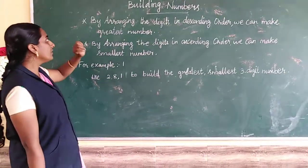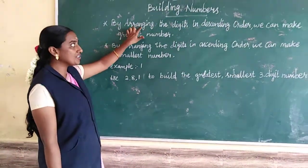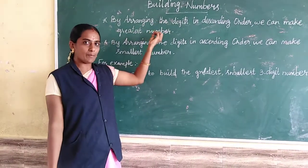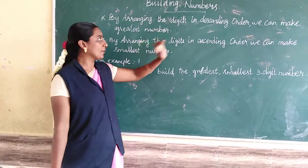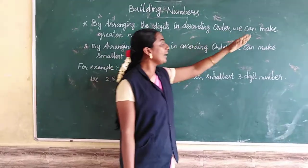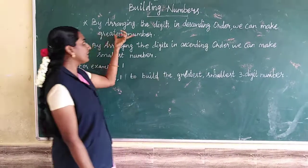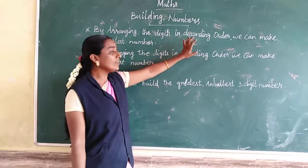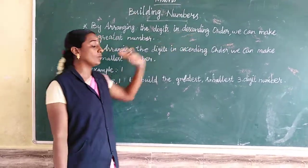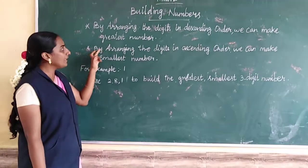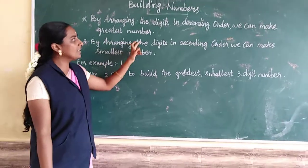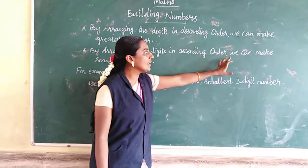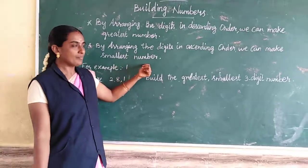By arranging the digits in descending order, we can make the greatest number. And by arranging the digits in ascending order, we can make the smallest number.